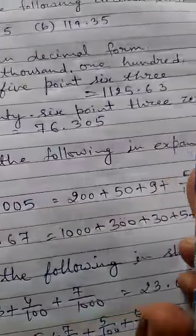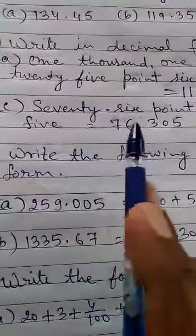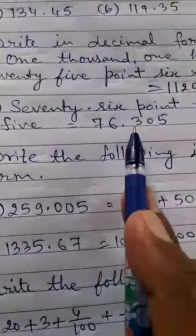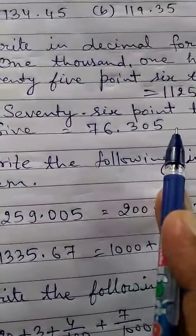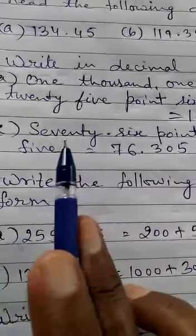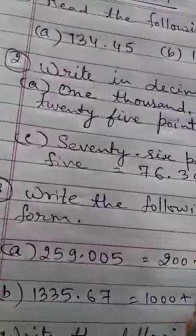Now 76.305 - seventy-six point three zero five. In this way you will write the decimal numbers. We have solved this question.